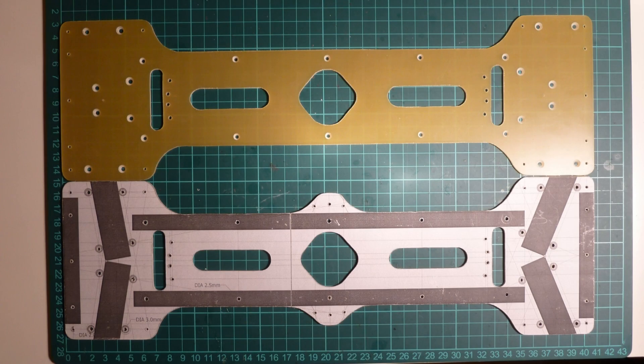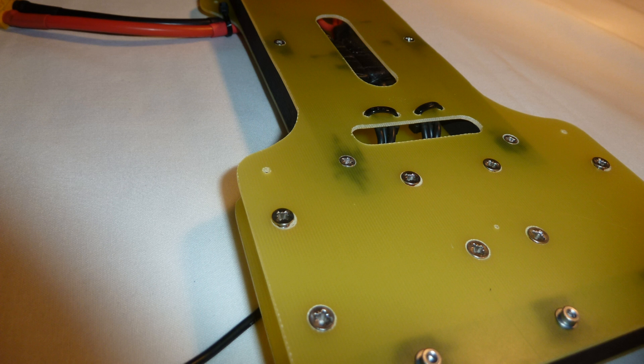The quadcopter is constructed from 1.6mm fiberglass sheet and wood sections. These are bolted together to give a torsionally rigid frame.